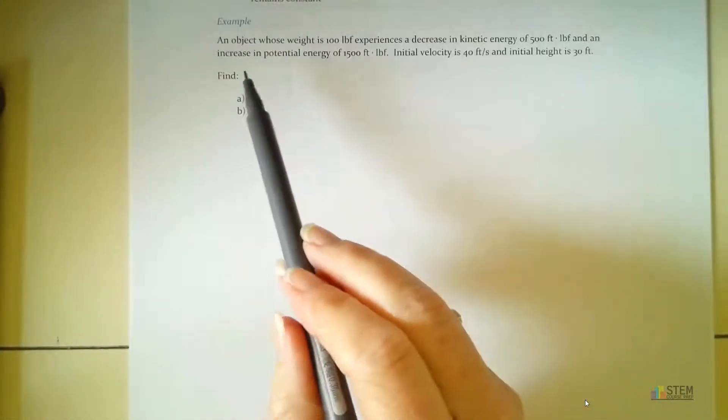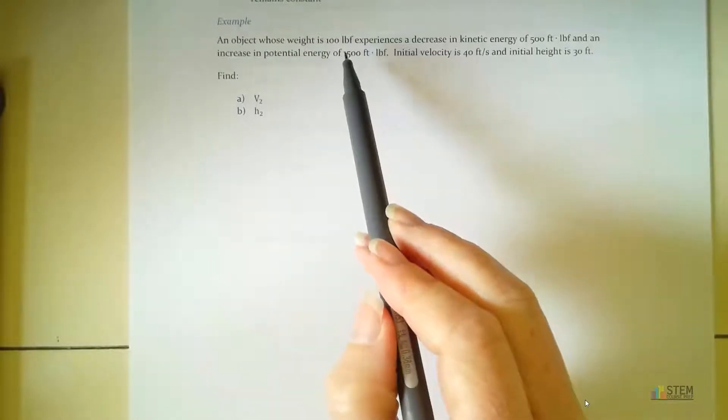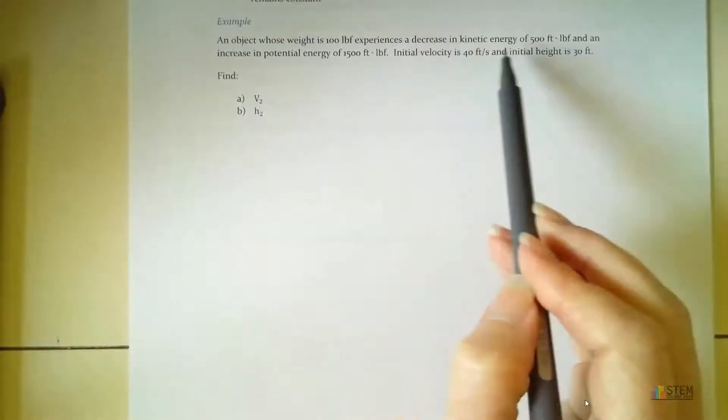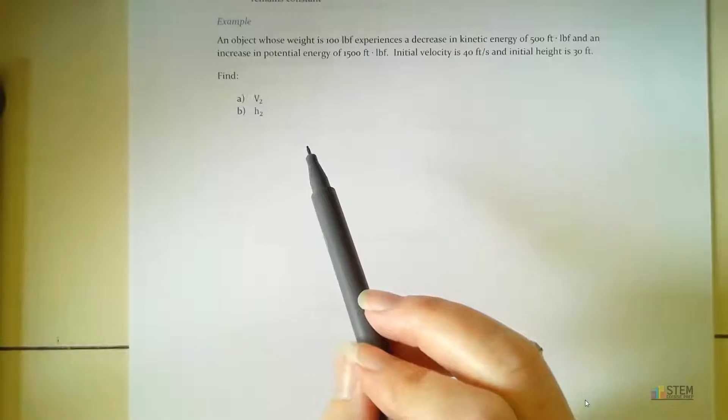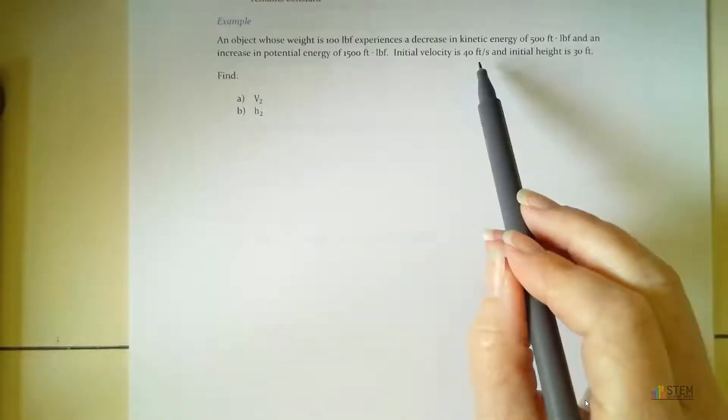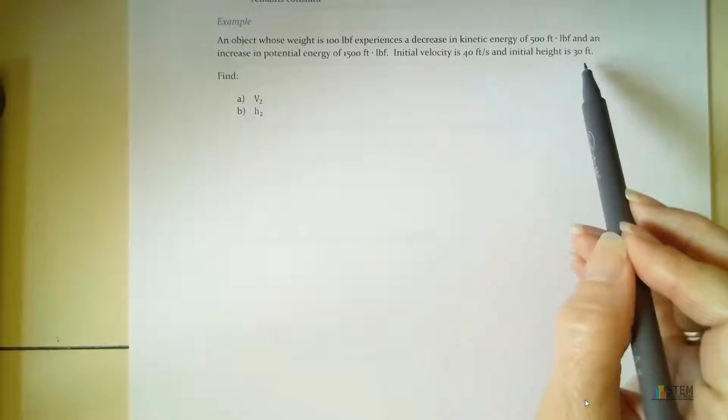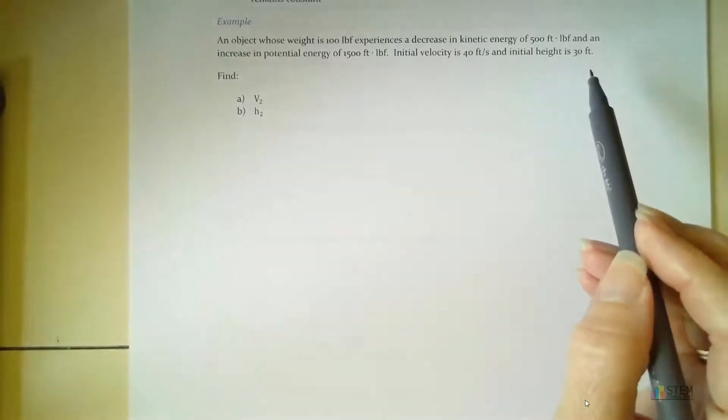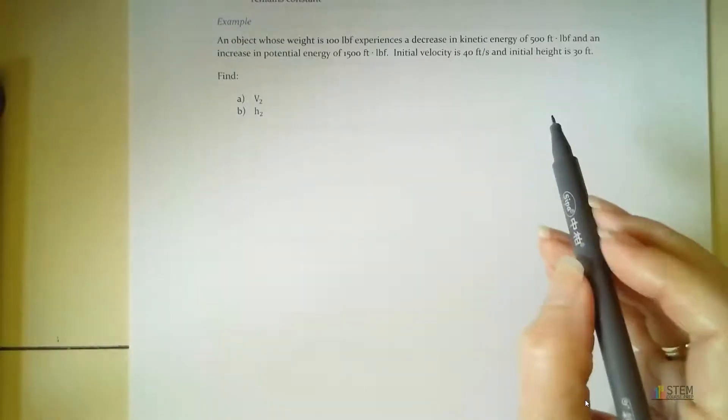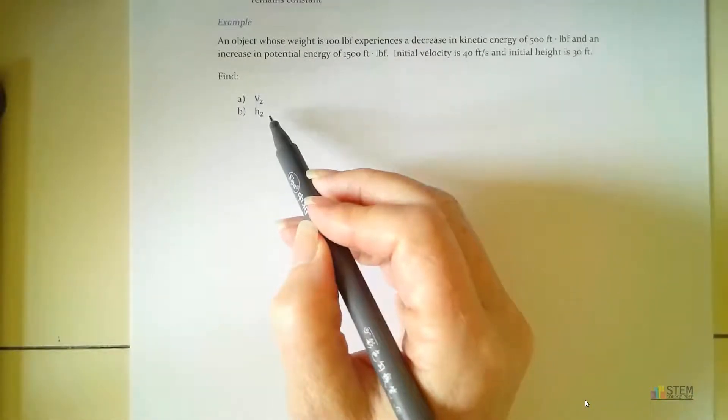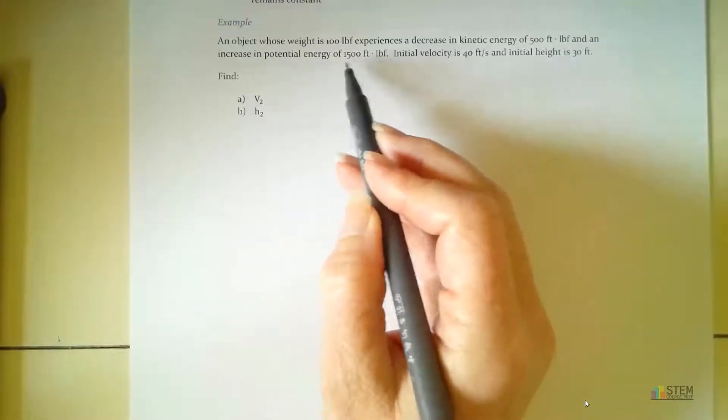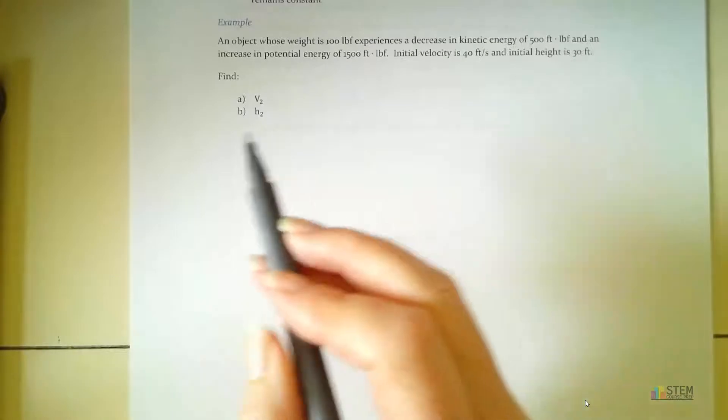So this problem tells us we have an object whose weight is 100 pound force. It's going to experience a decrease in kinetic energy of 500 foot-pound force, and an increase in potential energy of 1,500 foot-pound force. Our initial velocity is given as 40 feet per second, and initial height is given as 30 feet. We want to find the velocity at the second point and the height at the second point that will cause the decrease in energy or increase stated.